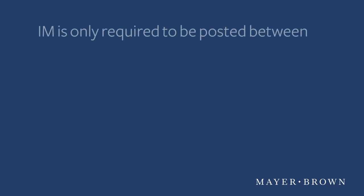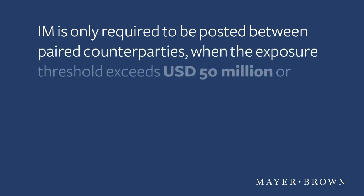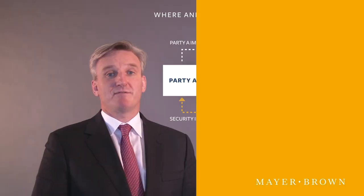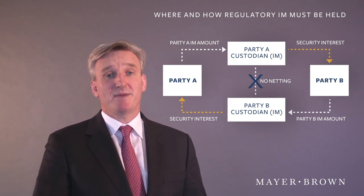IM is only required to be posted between paired counterparties with an exposure threshold exceeding 50 million dollars for the United States margin regulations and 50 million euros for the EU margin regulations. The exposure threshold is applied on a shared basis across counterparty groups. This means that a counterparty pairing can be required to put a full infrastructure package in place even though there is a relatively thin trading base and the threshold may never be met.